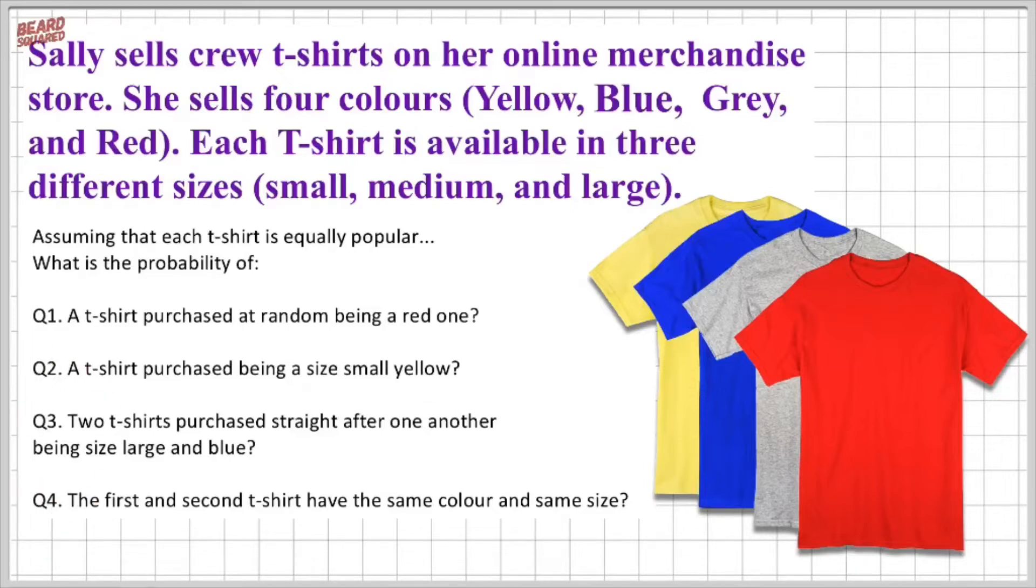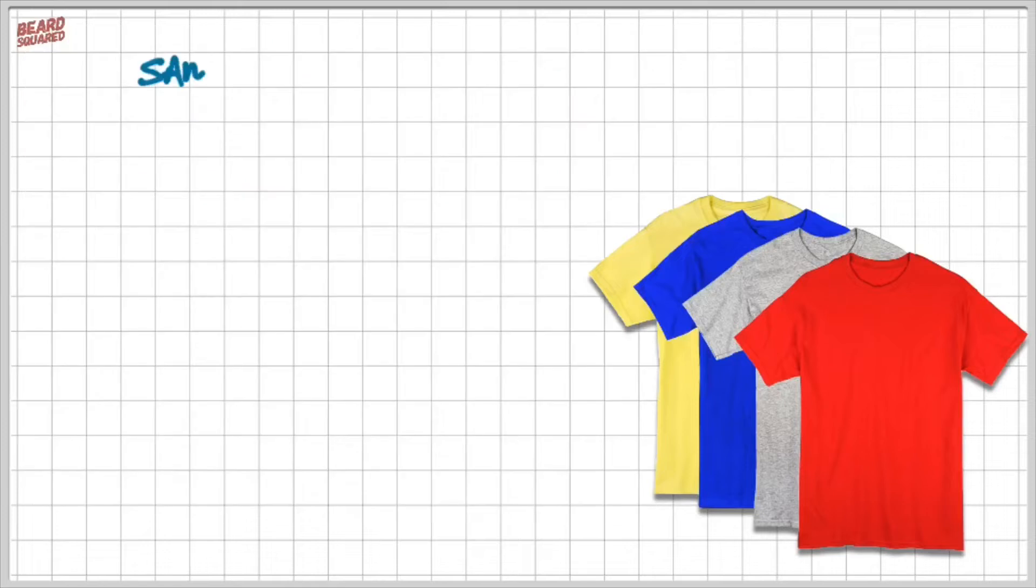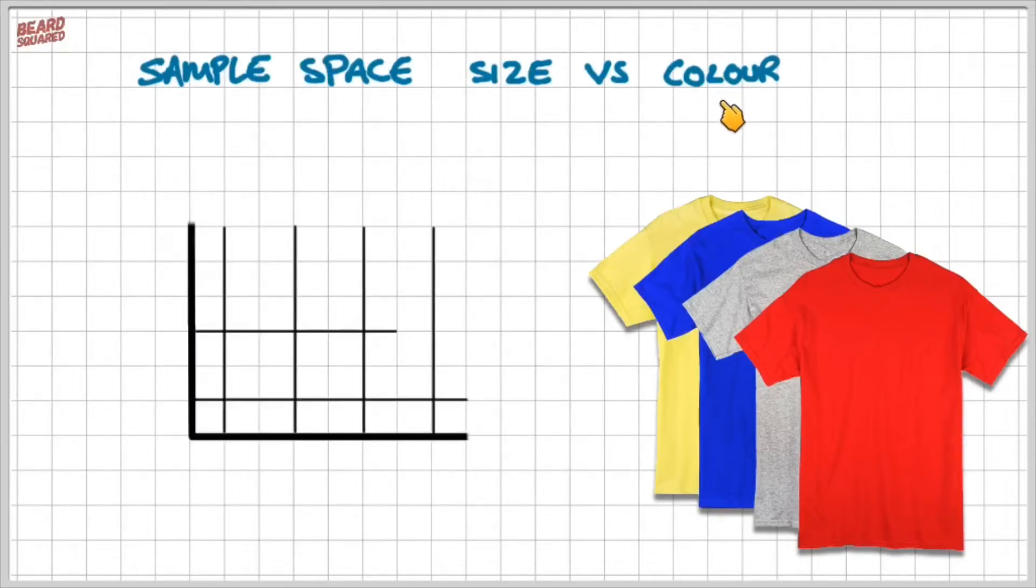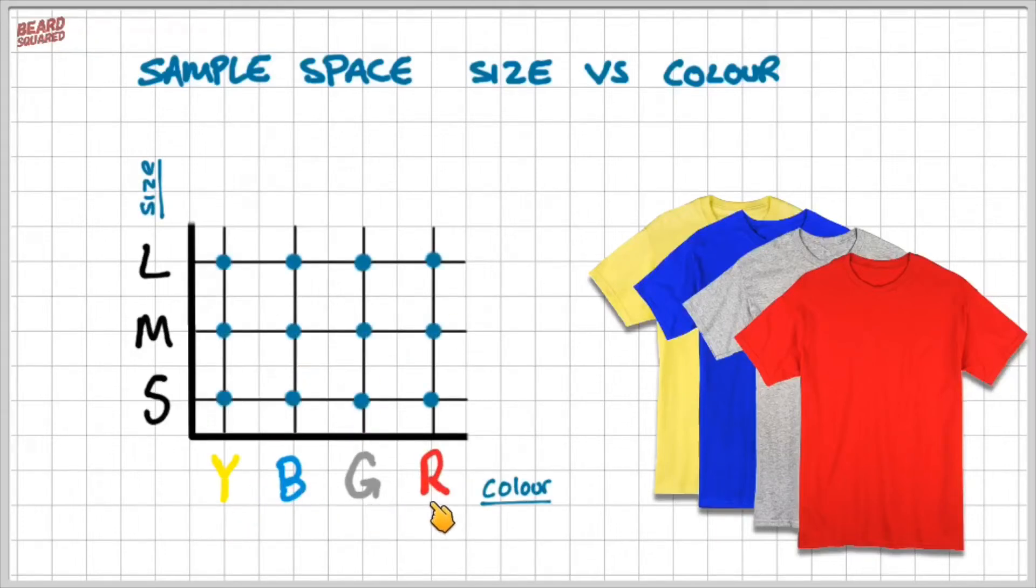For these next set of questions, I'm going to use a sample space. So let's check this out. I'm going to do a sample space for size versus color. Remember, I've got four colors: yellow, blue, gray, and red. And I've got three sizes: small, medium, and large. So in this sample space, I have 12 possible outcomes.